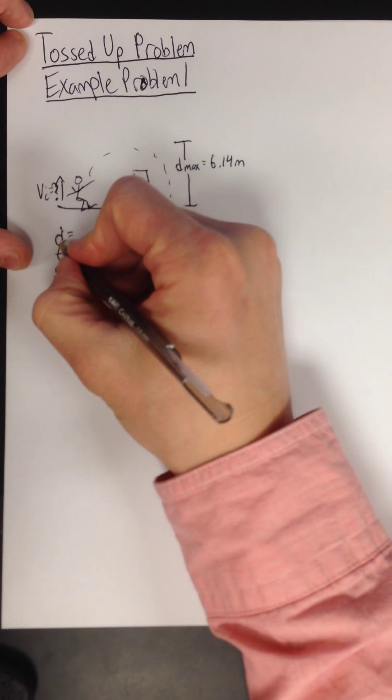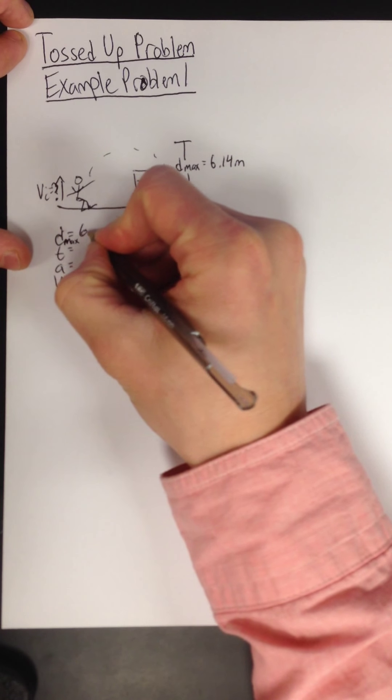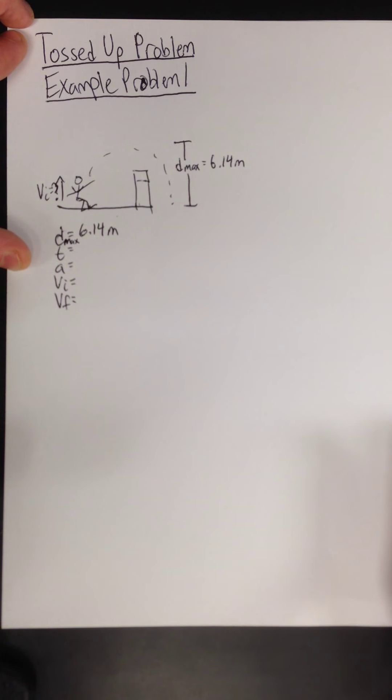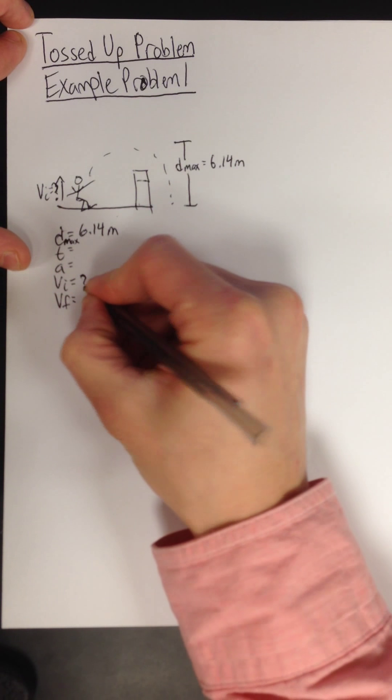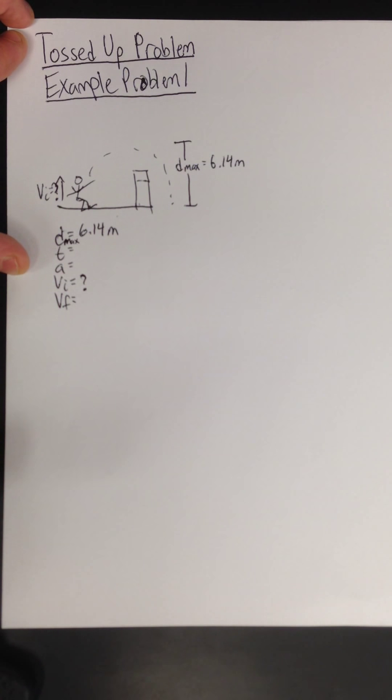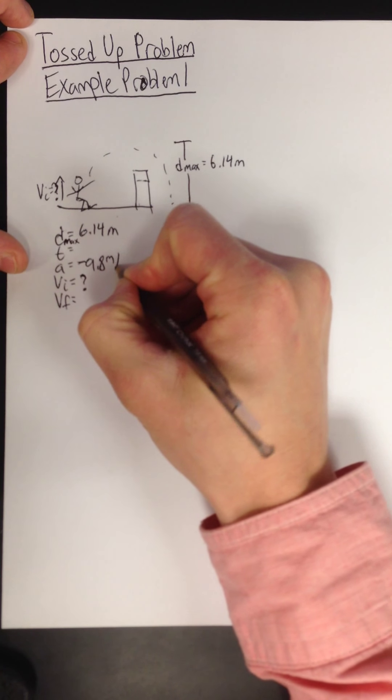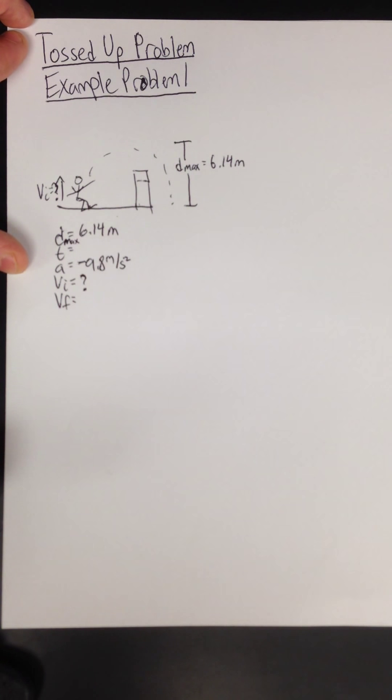We know that his D max is 6.14 meters. We're looking for his initial velocity to leave the ground. And while he's in the air, we know he is experiencing gravity's acceleration, which is negative 9.8 meters per second squared. Why is it negative? Because gravity always pulls down.